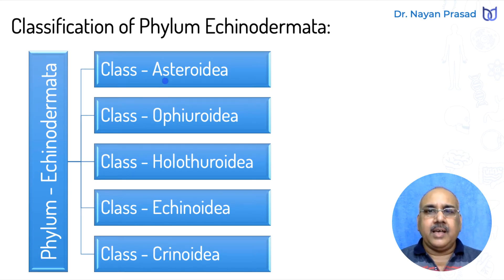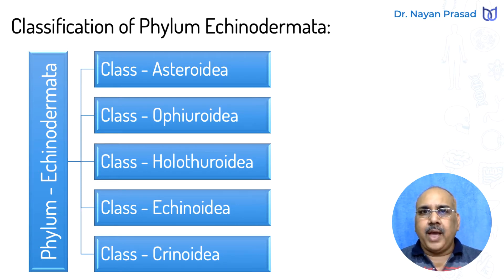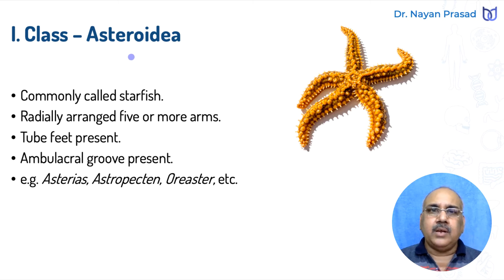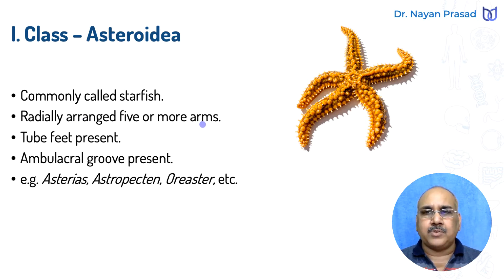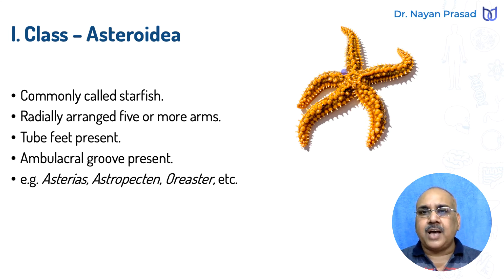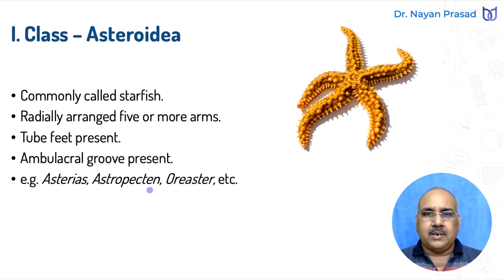The five main classes are Asteroidea, Ophiuroidea, Holothuroidea, Echinoidea, and Crinoidea. Class Asteroidea includes sea stars or starfish-like creatures, commonly called starfish. They have radially arranged five or more arms — if more, the arms are in multiples of five. For locomotion, they have tube feet. Ambulacral grooves are also present; the grooves in each arm can be seen on the lower side. Common examples are Asterias, Astropecten, Oriaster, etc.